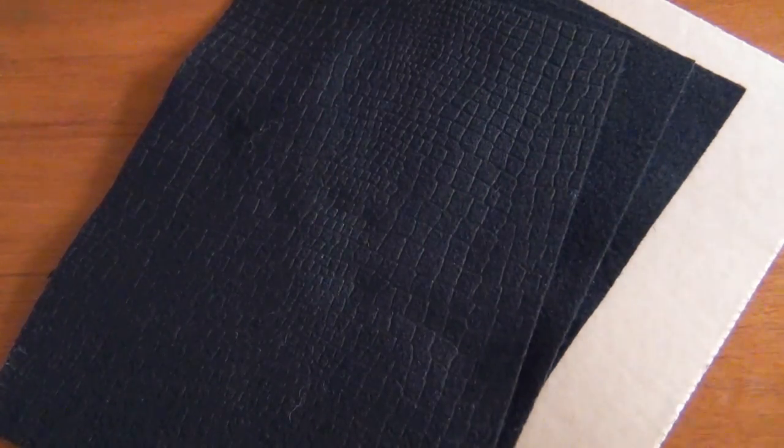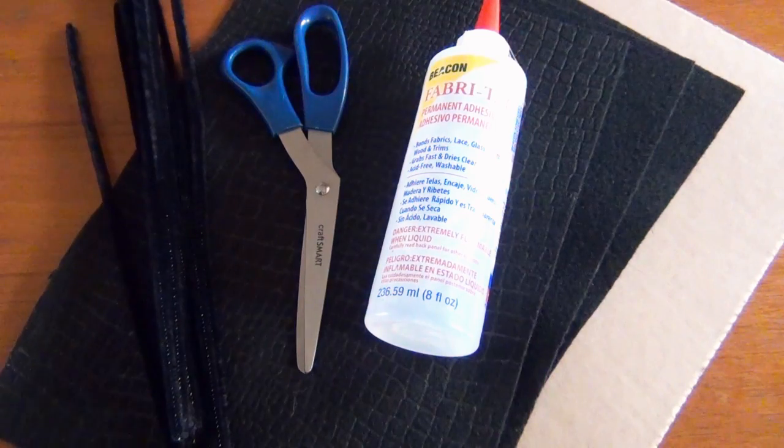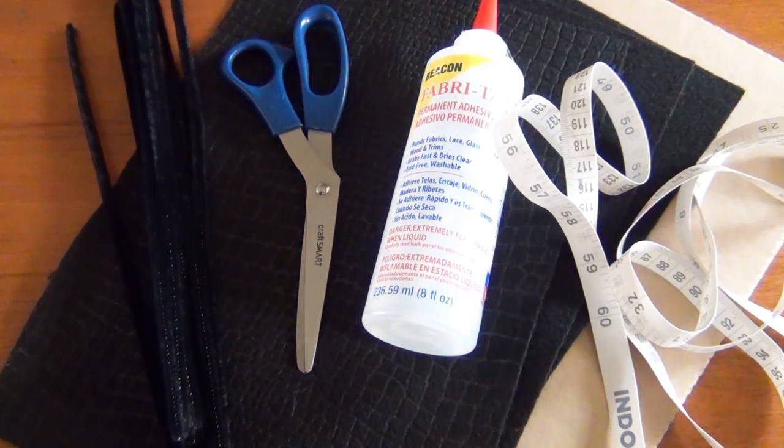For this next one you need adhesive felt, two pieces of regular black felt, and a textured piece of black felt, black pipe cleaners, scissors, Fabri-Tac, measuring tape, and velcro.